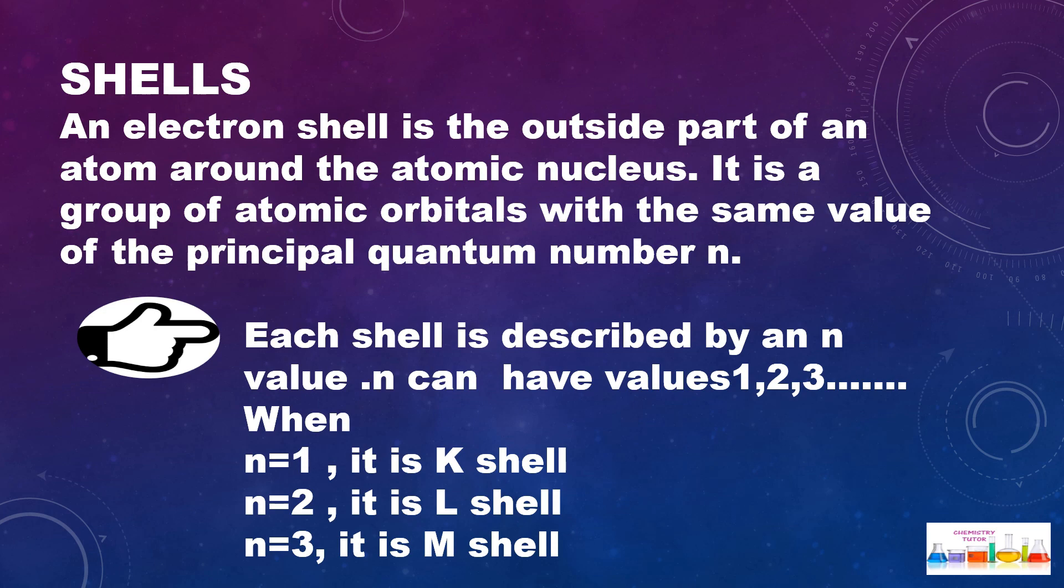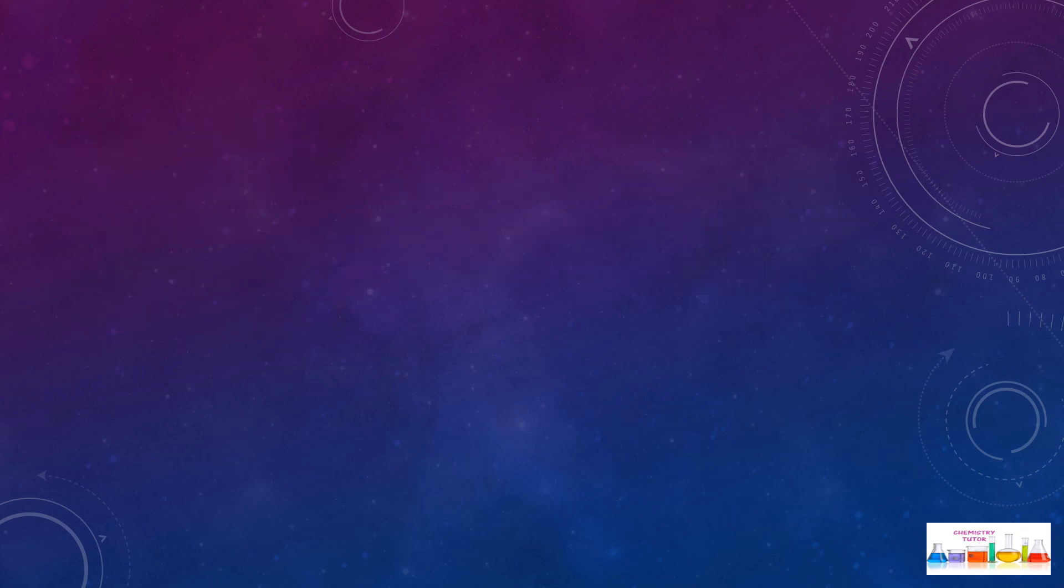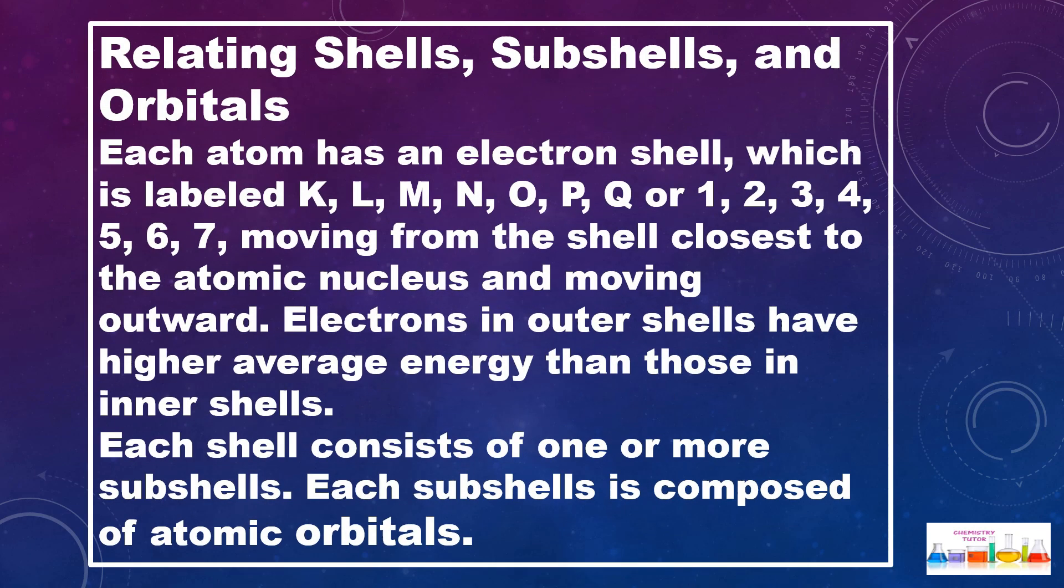Next is to know about the sub-shell. Sub-shell is a subdivision of electron shells separated by electron orbitals. Sub-shells are labeled as s, p, d, and f in an electron configuration.